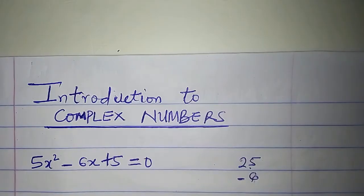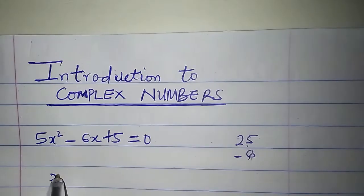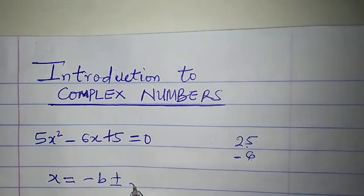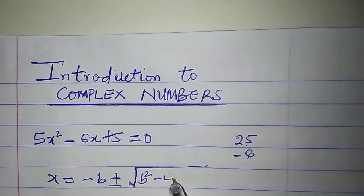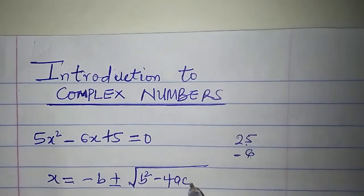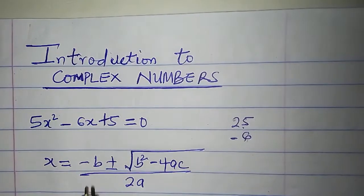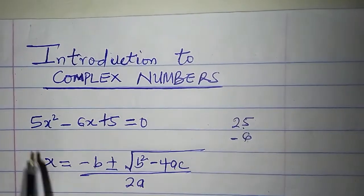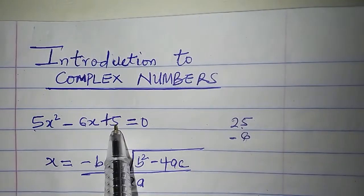But let us attempt to solve this equation using the formula method. X equals minus B plus or minus the square root of B squared minus 4AC, all over 2A. B is minus 6, A is 5, and C is 5 also.